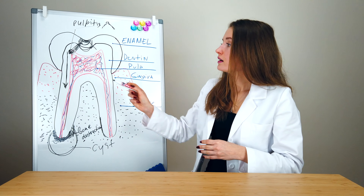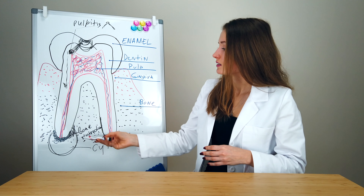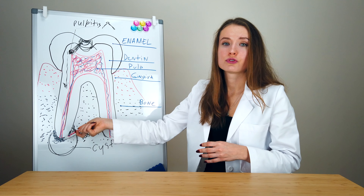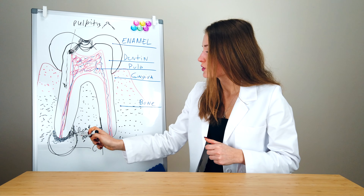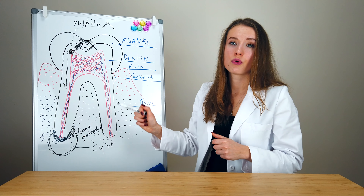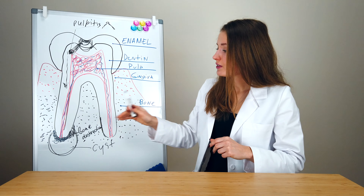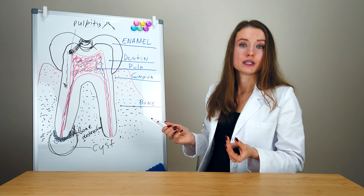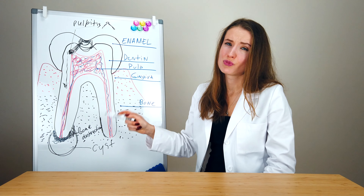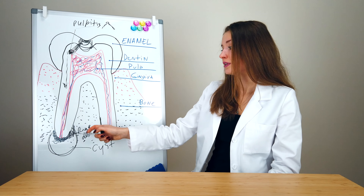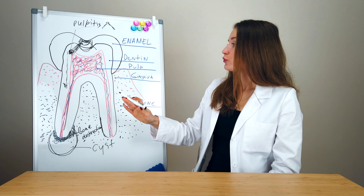Pulpitis is an inflammation of the pulp, and it is more complicated to treat because we have to do root canal treatment. In this case we also have to take an x-ray, because when we do root canal treatment, we need to make a filling of the root canal and we have to know the precision of this filling — we have to fill it all the way to the apex of the root.